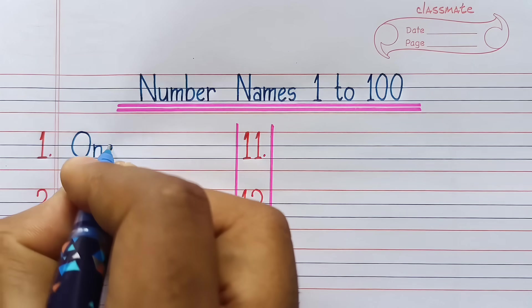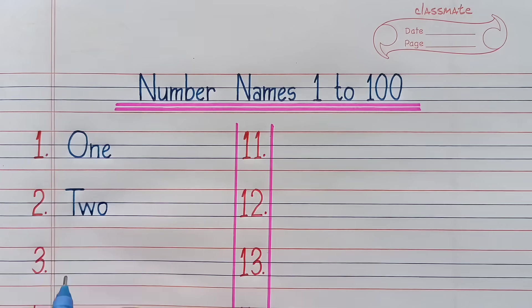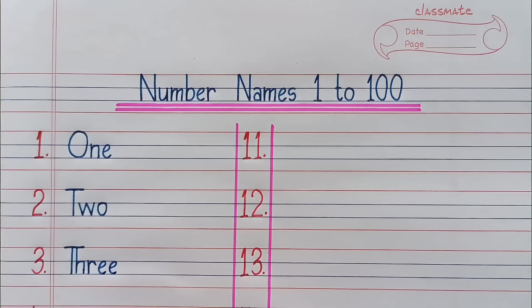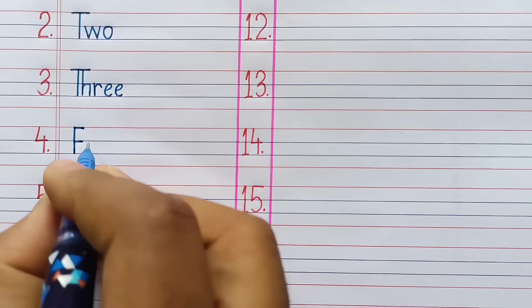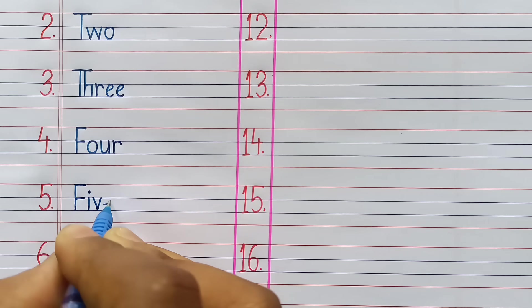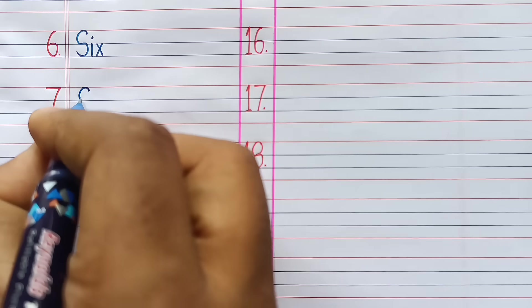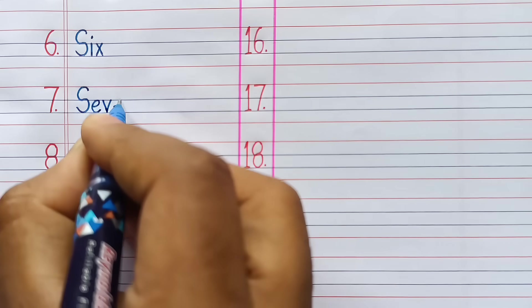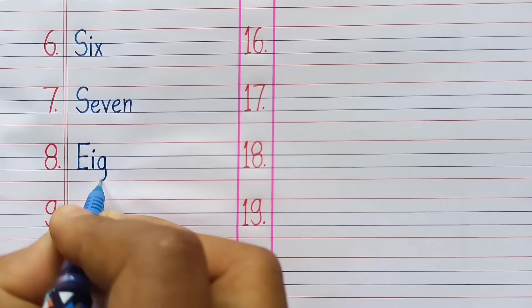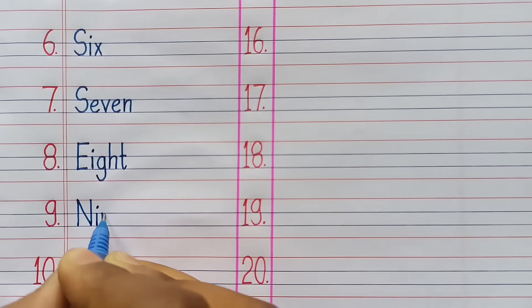1. O-N-E. 2. T-W-O. 3. T-H-R-E-E. 4. F-O-U-R. 5. F-I-V-E. 6. S-I-X. 7. S-E-V-E-N. 8. E-I-G-H-T. 9. N-I-N-E.